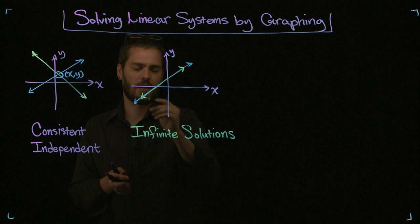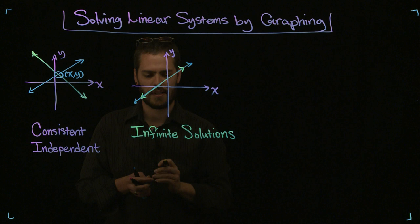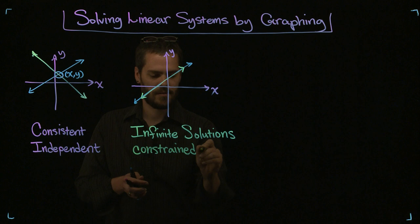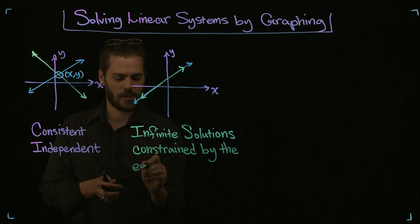And the way we do that is we say that the infinite solutions are any point on one of these lines. So, they are constrained by the equation that produced this line. And I'll show you how to do that more specifically using set notation in a different video. But so far, let me just say infinite solutions constrained by the equation of the line.